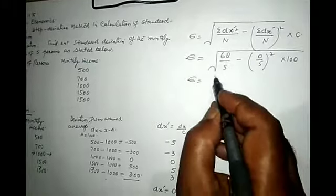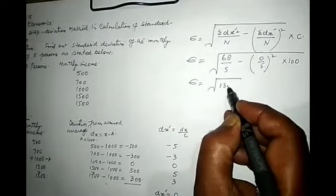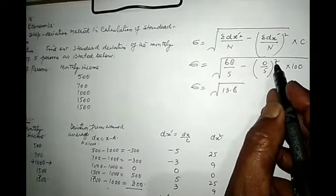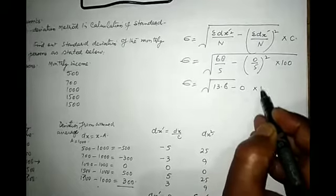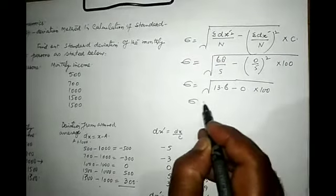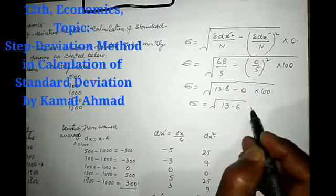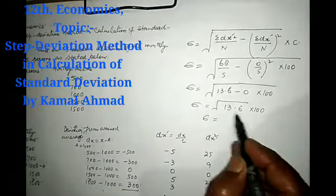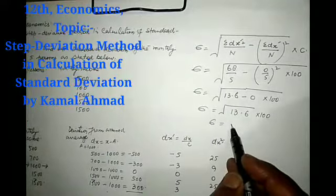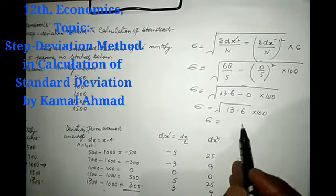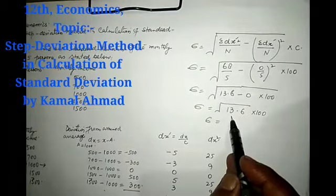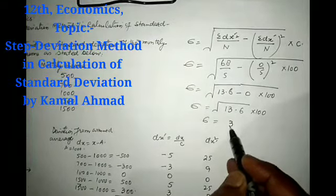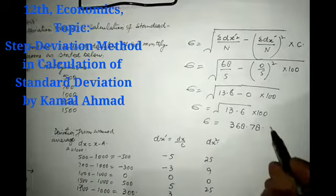When we divide 68 by 5 we will get root of 13.6, and 0 divided by anything is equal to 0. When we square it, it is equal to 0 minus 0 into 100. This will be root of 13.6 into 100. The answer is 368.78.